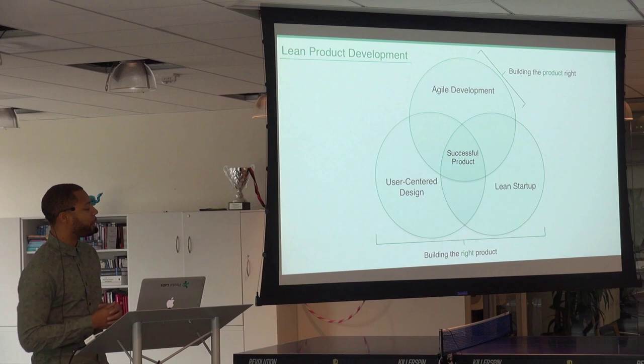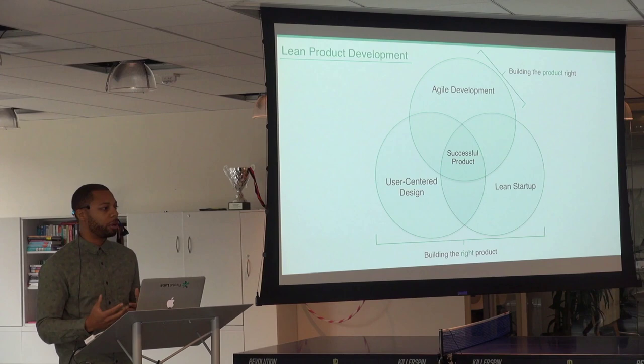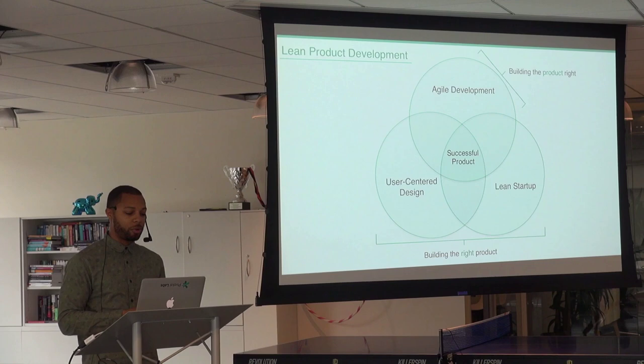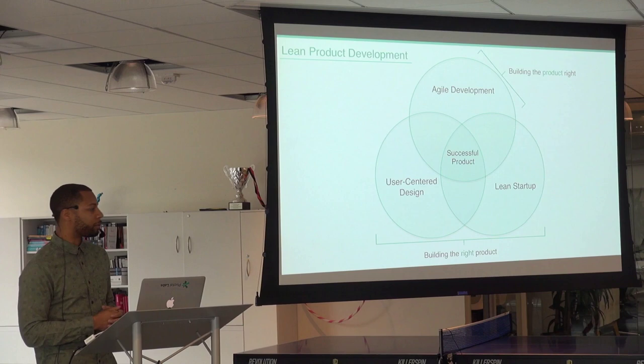That better way is lean product development — how we think about product development from a Pivotal standpoint. Lean product development combines three core disciplines: lean startup, user-centered design, and agile development to deliver a successful product. Lean startup and user-centered design ensure we're building the right product with features customers and users will value, while agile development is about building the product in the right way in a sustainable manner.